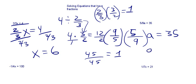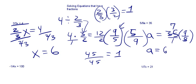So we're left with an a. Now we multiply this side by 9 fifths, and to keep our equation in balance, we've got to multiply the other side by 9 fifths too. Our 5 goes into 35 seven times, so a is equal to 63.